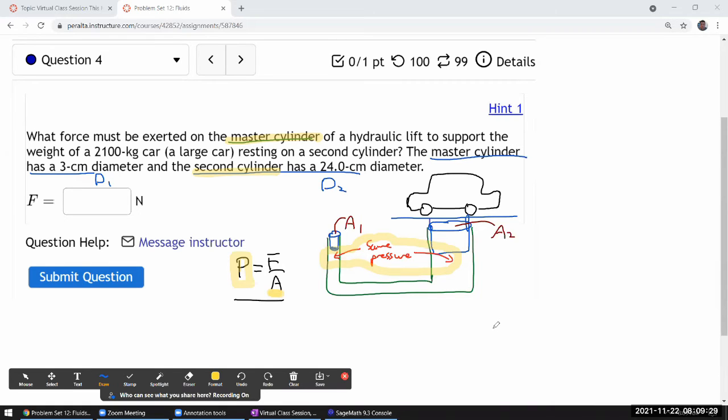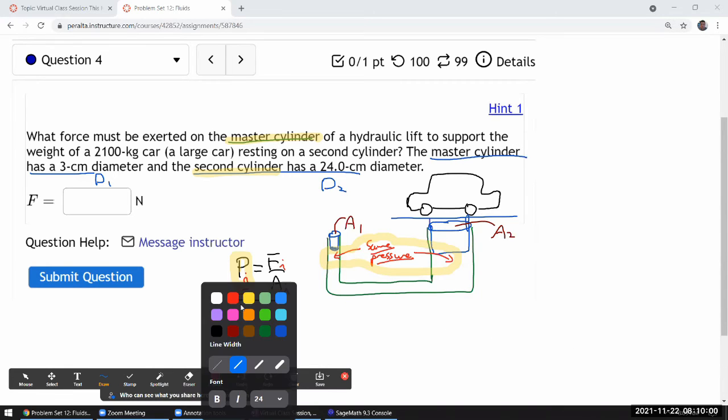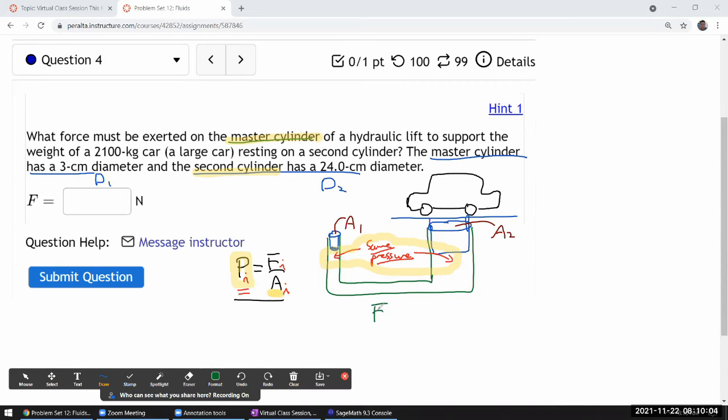Let me write down an expression that gives us a way to connect our unknowns to known quantities. Since we have this relationship that pressure under some condition is equal to force under some condition divided by area, and we know the pressure will be the same in these two different situations, let me set up an equation using that. We can say that force at the master cylinder one divided by area of the master cylinder is equal to pressure at that location, and that's going to be equal to the pressure at the secondary cylinder, which will be force at the secondary cylinder divided by area at the secondary cylinder.